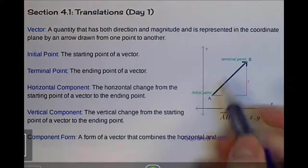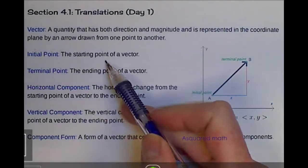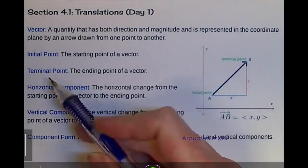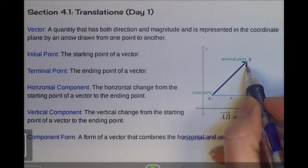This initial point here is where it starts. So the initial point is the starting point of a vector. And then it ends somewhere because it's only so long. So wherever it ends is that terminal point. The terminal point always has that head of your arrow.